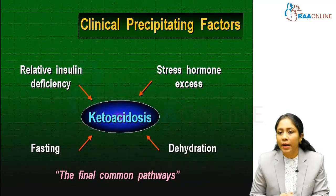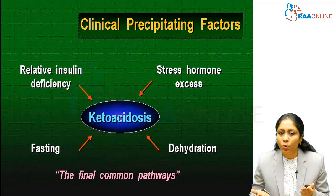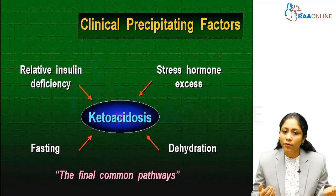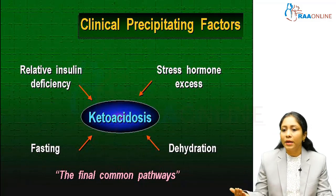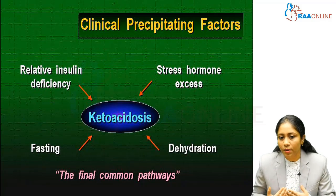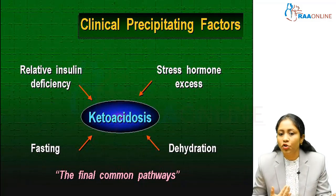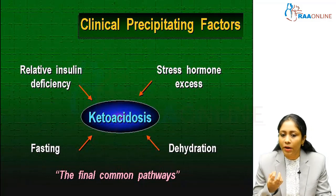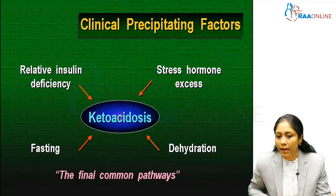What are the precipitating factors for DKA? Ultimately it comes down to the balance between insulin and counter-hormones. Whenever there is relative insulin deficiency and counter-hormone excess, diabetic ketoacidosis can occur. Conditions like fasting and dehydration also drive the patient into the final common pathway resulting in DKA.